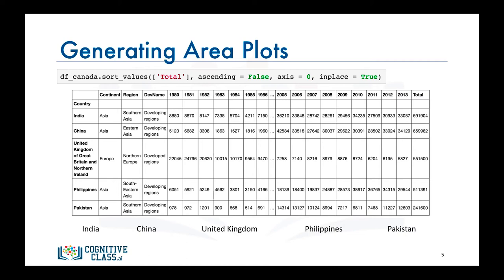Note that matplotlib plots the indices of a data frame on the horizontal axis. With the data frame as shown, the countries will be plotted on the horizontal axis. So to fix this, we need to take the transpose of the data frame.